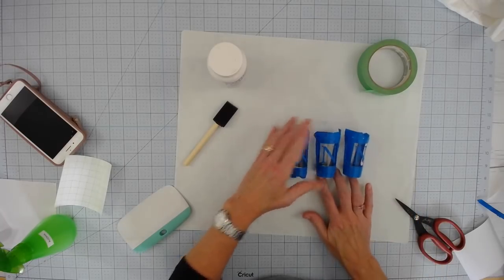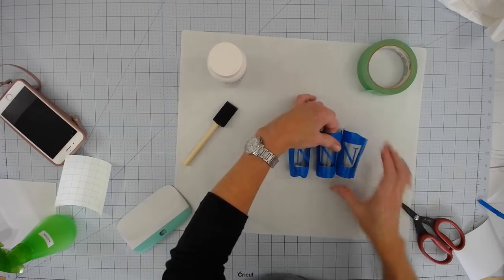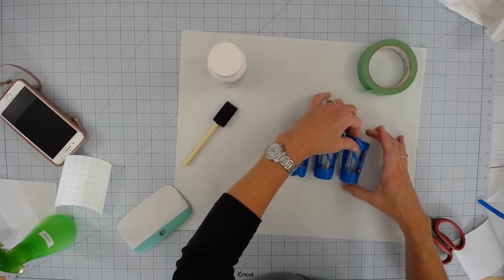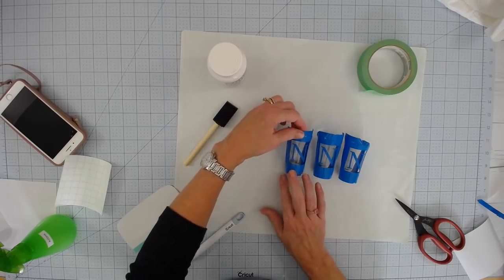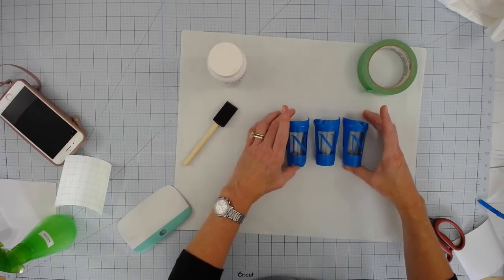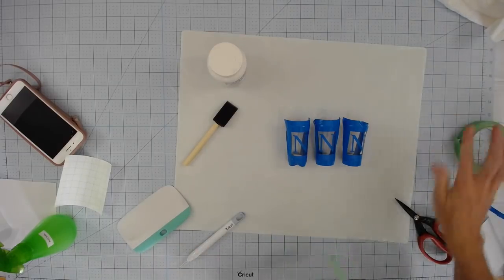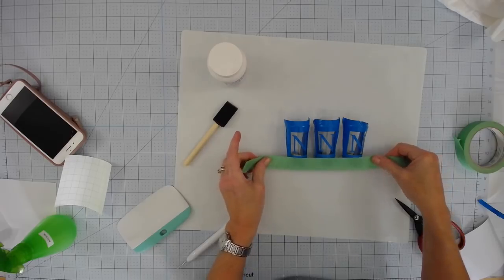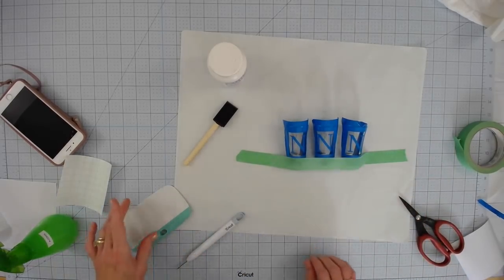Now I'm just setting the shot glasses on top of my transfer tape just to help keep them from rolling around while I apply the armor etch. And I think I'm going to grab a piece of masking tape and tape those down to secure them even further. This is just something I'm doing. You don't have to do that, but I just wanted to make sure that they didn't roll once I get the armor etch on.